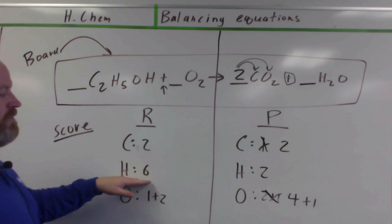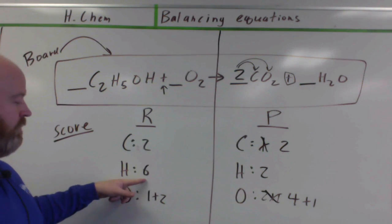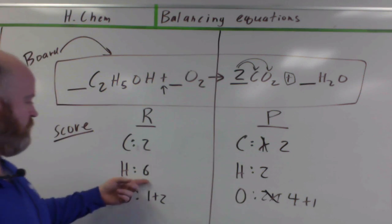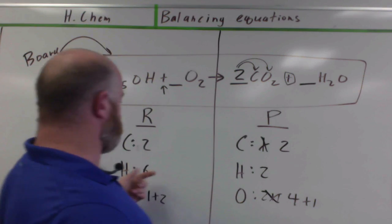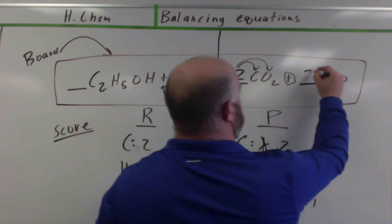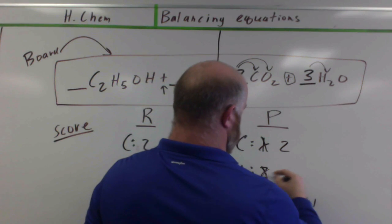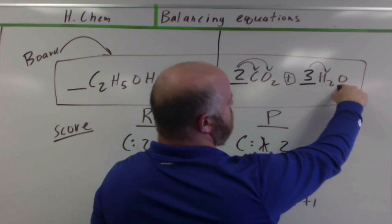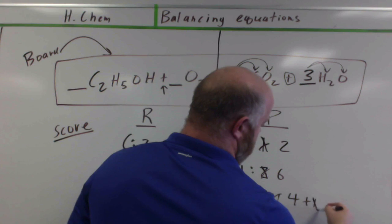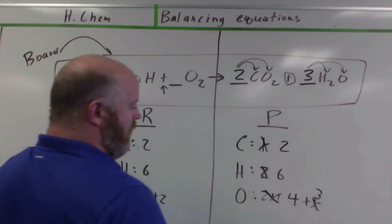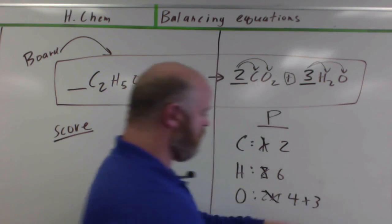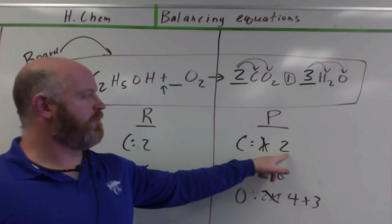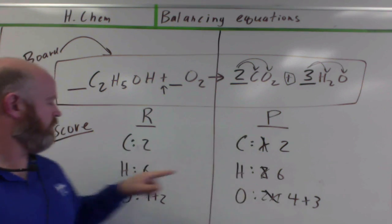Take a look. My carbons are good. I go down to my hydrogens. Well, I have two hydrogens over here. I have six hydrogens over here. So I need to get these hydrogens to match up to these. So what do I want to put in front? Well, let's see. I've got two of them. I need to get six. Probably a three. So I can put a three here. So three times two is six. Three times one is three.